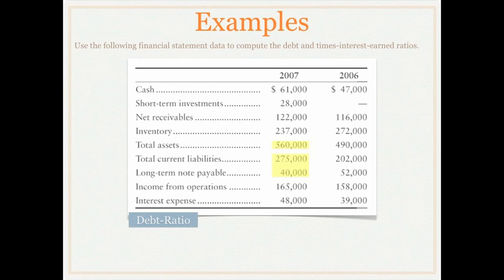We'll take the total current liabilities and add that to our long-term note payable for our numerator and divide that by our total assets of $560,000. That will give us a debt ratio of 0.56 or 56%. What this tells us is that 56% of this company's assets are financed with debt. A good rule of thumb typically is a debt ratio of 0.6 or lower.